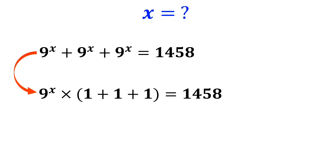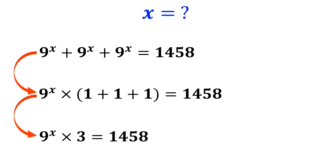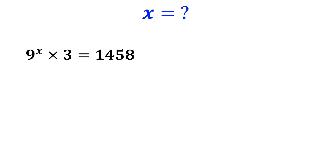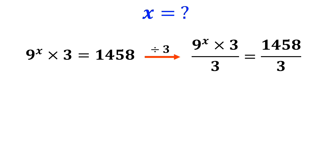9 to the power of x times (1 plus 1 plus 1) equals 1458, which simplifies to 9 to the power of x times 3 equals 1458. Now we divide both sides of the equation by 3, and it simplifies to 9 to the power of x equals 486.